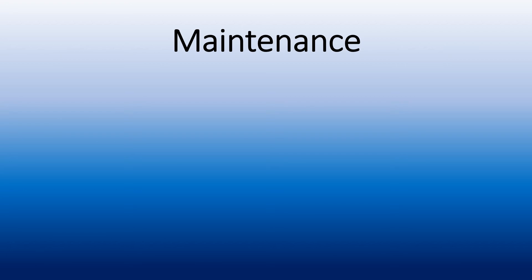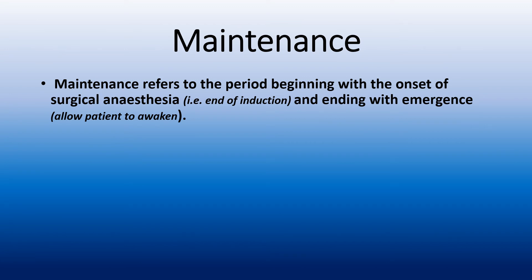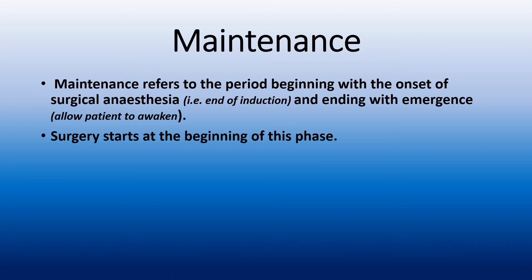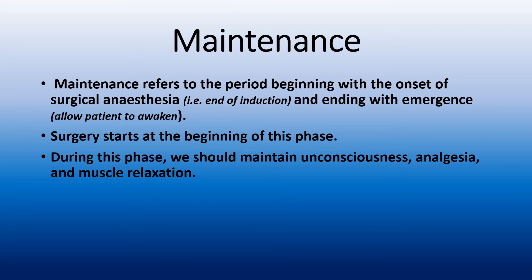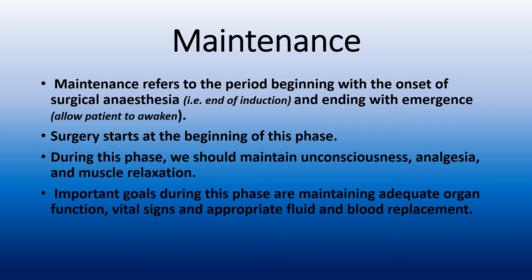The second phase of general anesthesia is maintenance. Maintenance refers to the period beginning with the onset of surgical anesthesia and ending with emergence of the patient. Surgery starts at the beginning of this phase. During this phase, we should maintain unconsciousness, analgesia, and muscle relaxation. The important goals during this phase are maintaining adequate organ function, vital signs, and appropriate fluid and blood replacement.